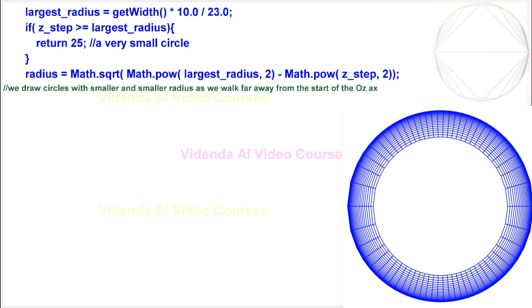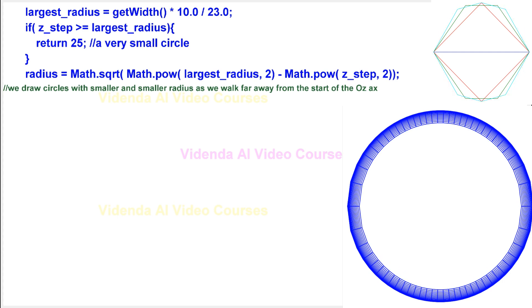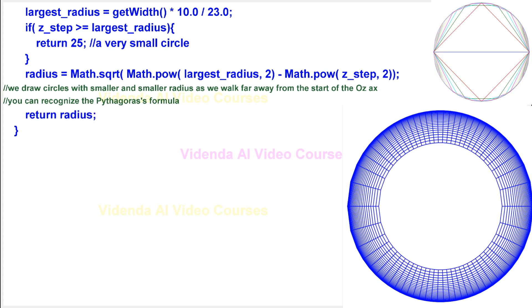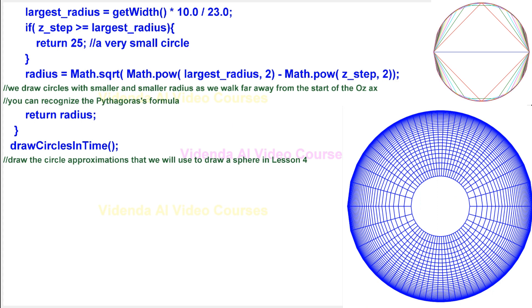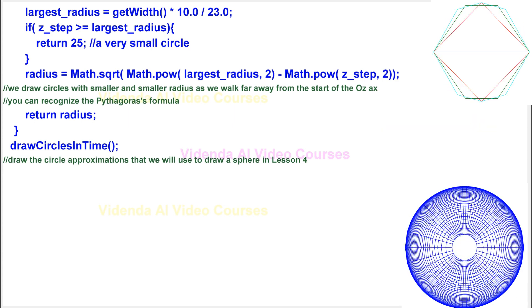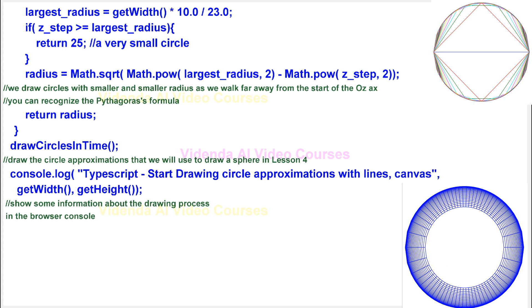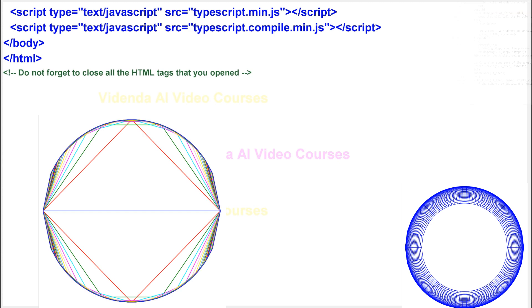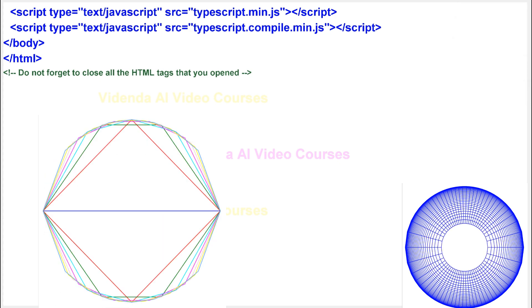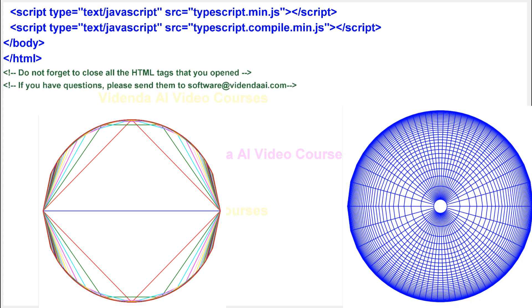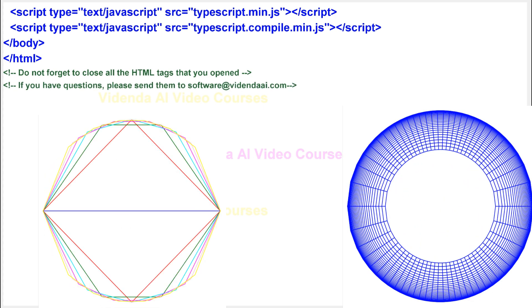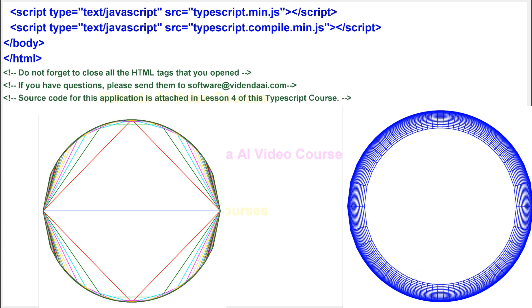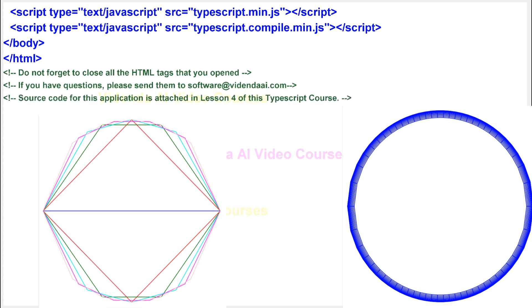We draw circles with smaller and smaller radius as we walk far away from the start of the oz-axis. Do not forget to close all the HTML tags that you opened. If you have questions, please send them to software at vdendai.com. Source code for this application is attached in lesson 4 of this TypeScript course.